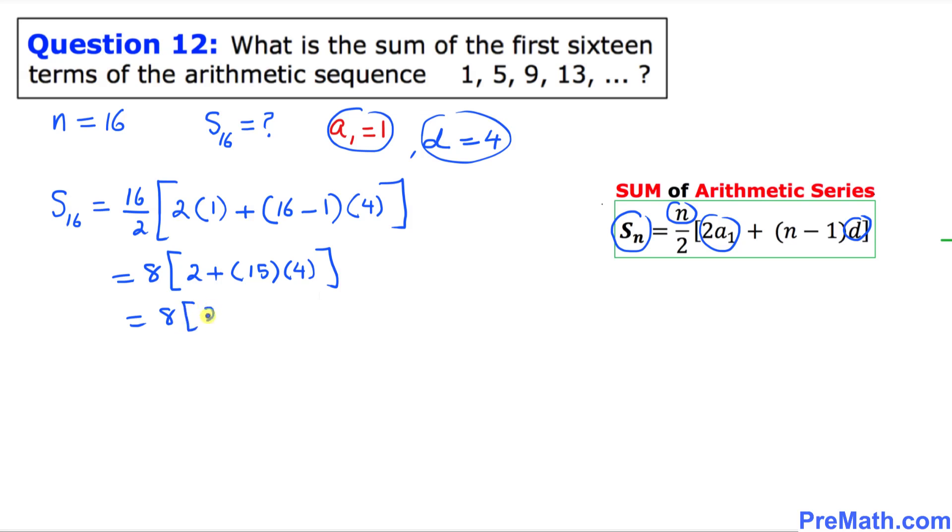8 and this become 2 plus 60. So this is going to be 8 times 62. That is going to give us 496.